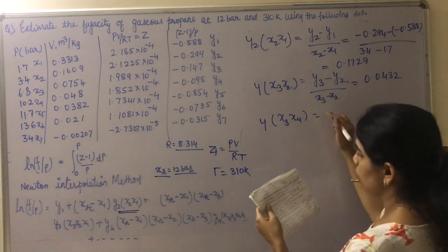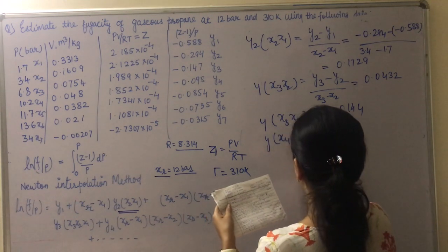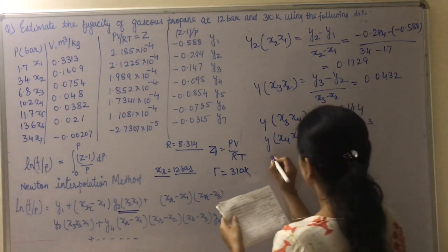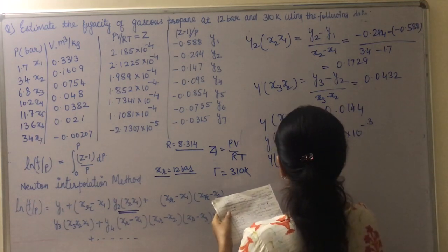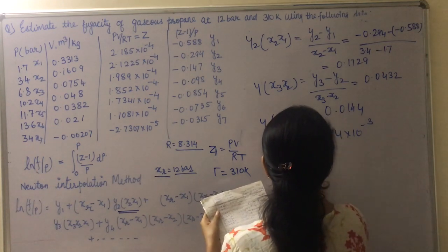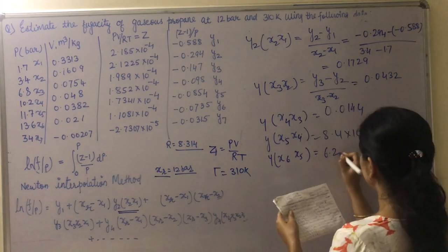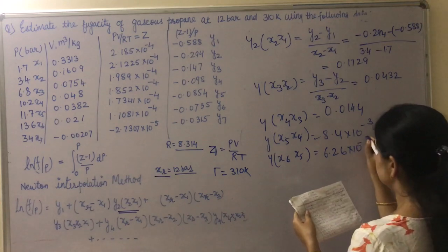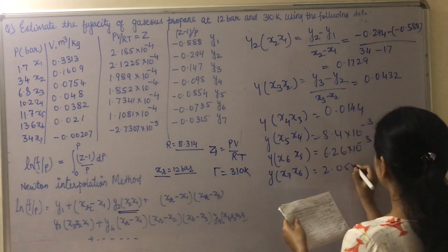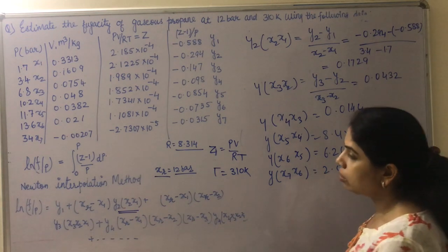Continuing the first-order divided differences: the value for X4-X3 is 0.0144, then 8.4×10⁻³ for X5-X4, then 6.26×10⁻³ for X6-X5, and 2.05×10⁻³ for X7-X6. This completes the first order. Now we move on to the second order.